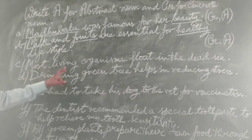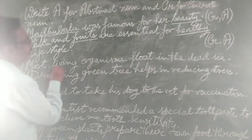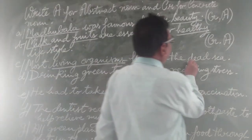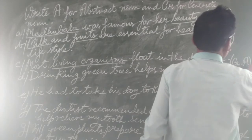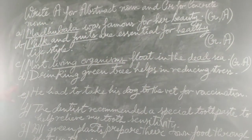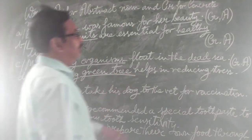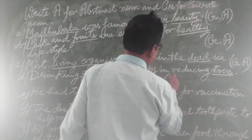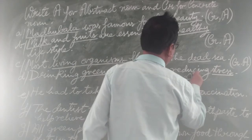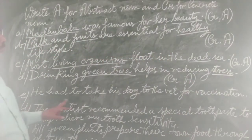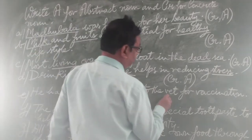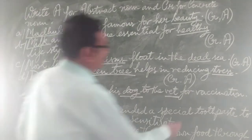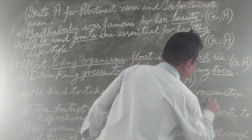Now come to C: 'Most living organisms float in the Dead Sea.' Living organisms are concrete nouns. Dead — in 'Dead Sea' — can be considered abstract. So you can write CR for concrete noun and A for abstract noun. Now look at E: 'He had to take his dog to the vet for vaccination.' Here dog and vet are both concrete nouns.